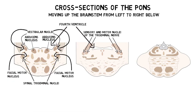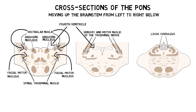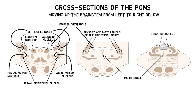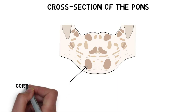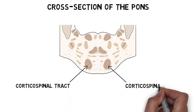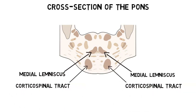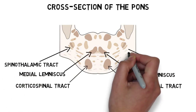The pons also contains the locus coeruleus, the largest collection of norepinephrine-containing neurons in the brain, and some of the raphe nuclei, the major serotonin-producing neurons of the brain. The pons also serves as a conduit for many tracts passing up and down through the brainstem, like the corticospinal tract for voluntary movement, the medial lemniscus for tactile and proprioceptive sensations, and the spinothalamic tract for pain and temperature sensations.